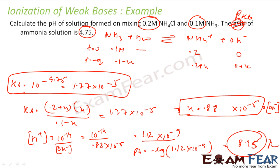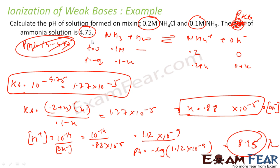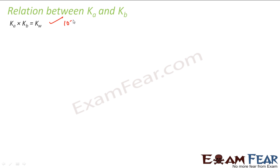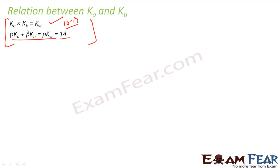Note: if pOH were given instead of pKB, finding pH would be very easy — just pH = 14 − pOH. But here pKB was given. The relationship is: Ka × Kb = Kw = 10⁻¹⁴, and equivalently pKa + pKb = pKw = 14.